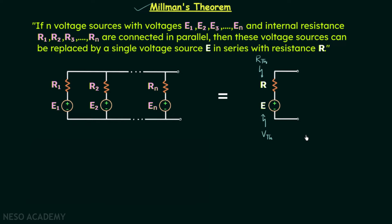Now what about the expressions for E and R? We will develop the Norton's equivalent circuit for this network, and once we have In and Rn, we will calculate Vth which is E and Rth which is R. Finding the Norton's equivalent circuit for this network is straightforward.